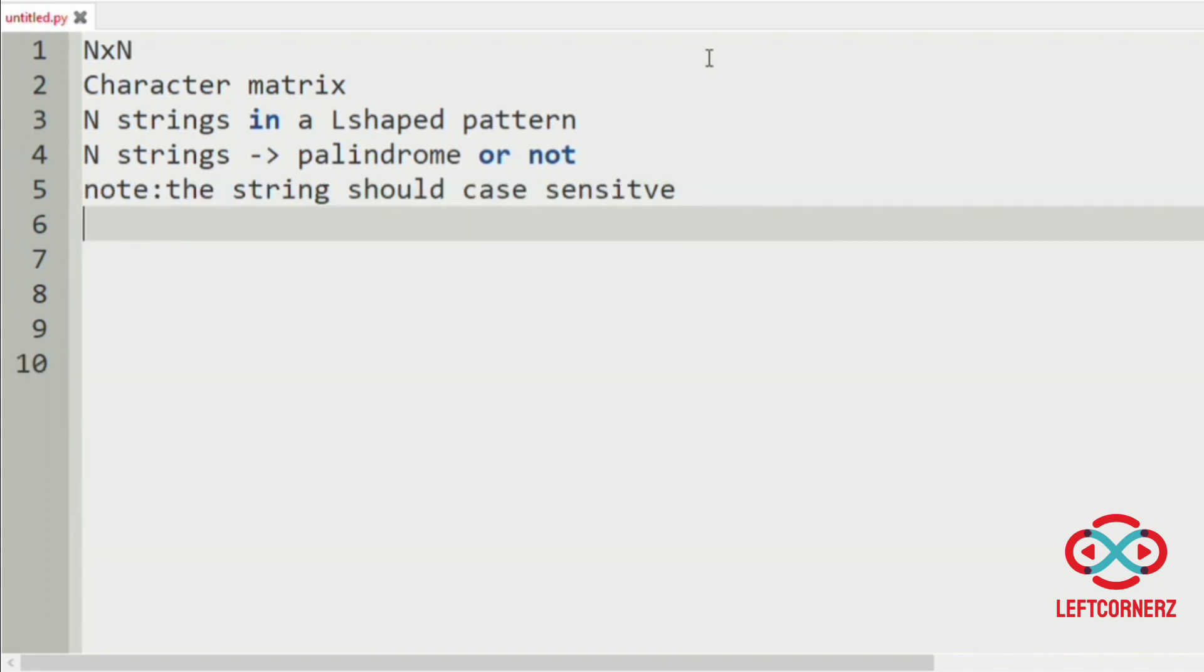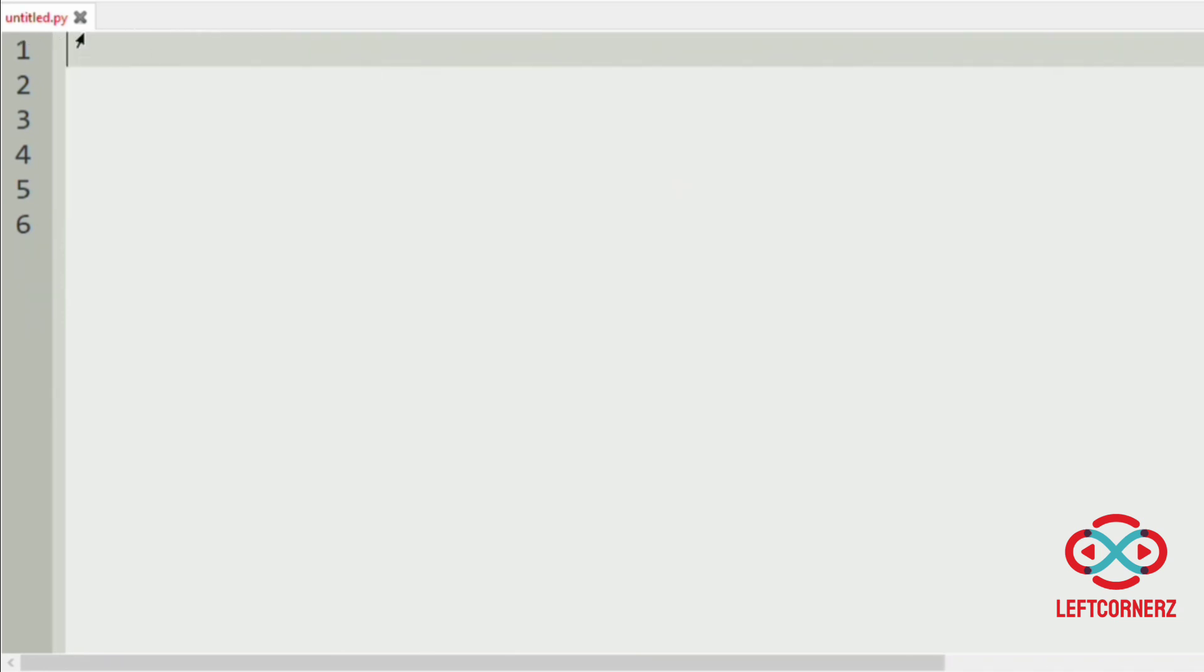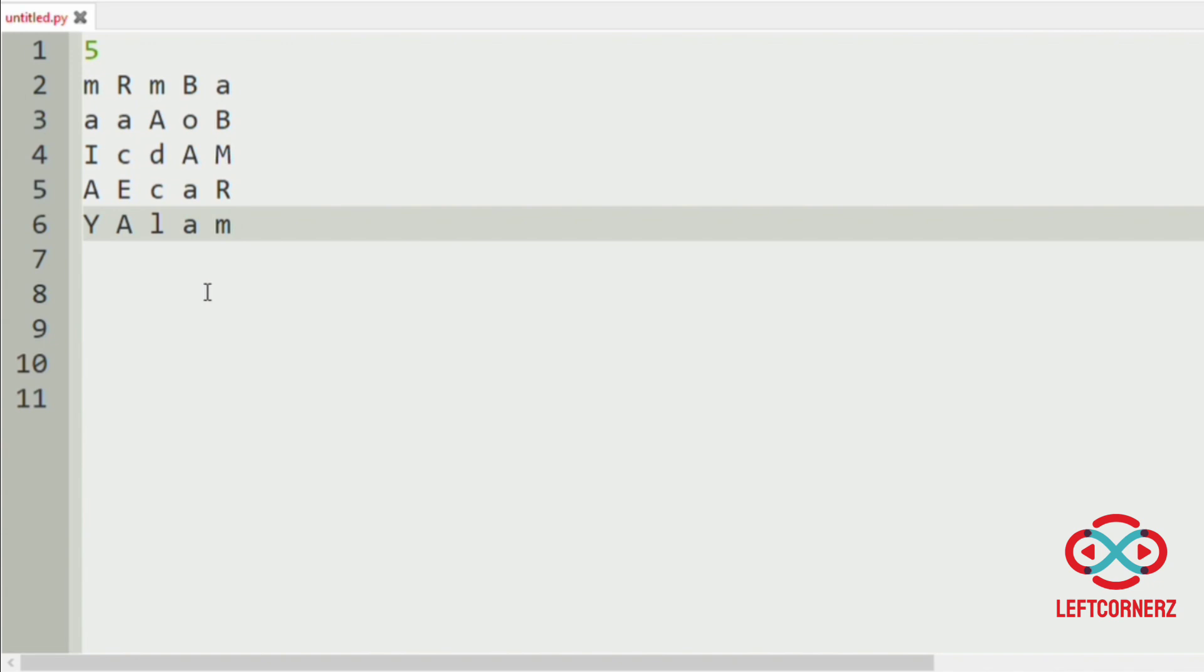Now let us consider an example. Here we have this character matrix with five strings, and the N string with the L-shaped pattern is this.